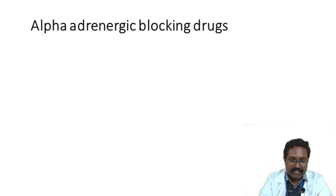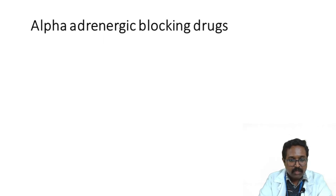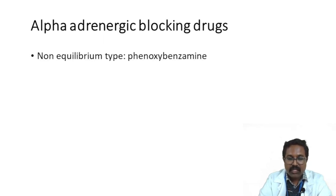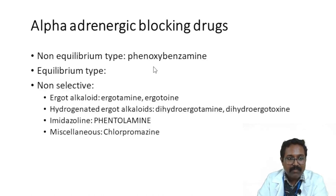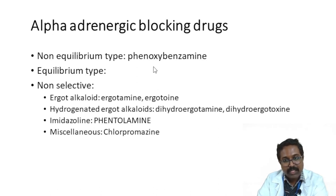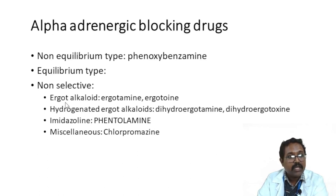Alpha adrenergic blocking drugs are drugs that block alpha receptor-mediated activity anywhere in the body. These can be classified into non-equilibrium type — with phenoxybenzamine as an example — and equilibrium type, also called competitive type of antagonism. The equilibrium type is further classified into non-selective and selective subtypes.